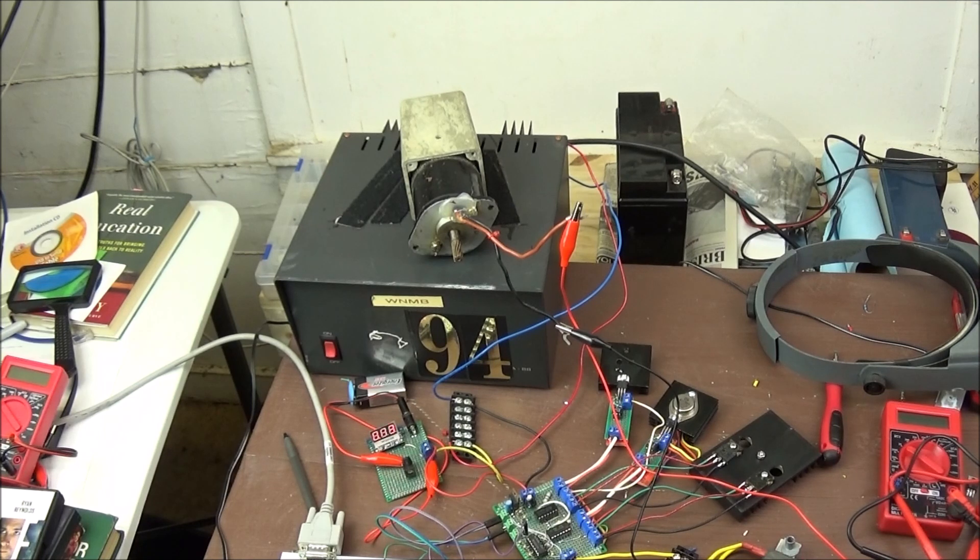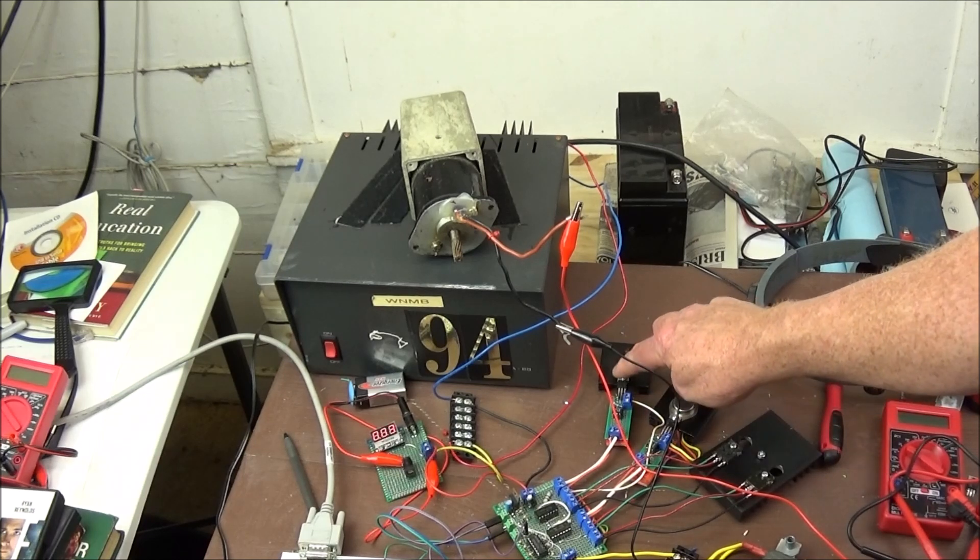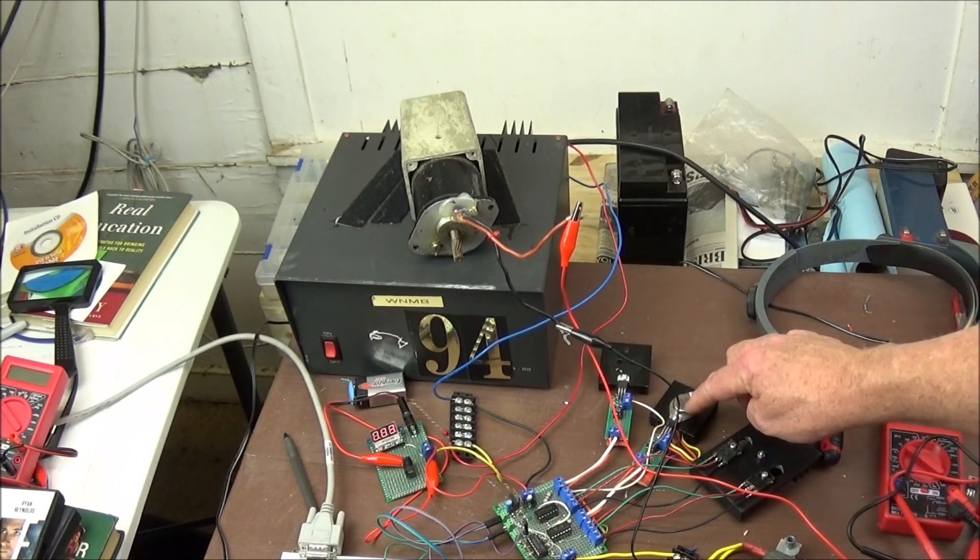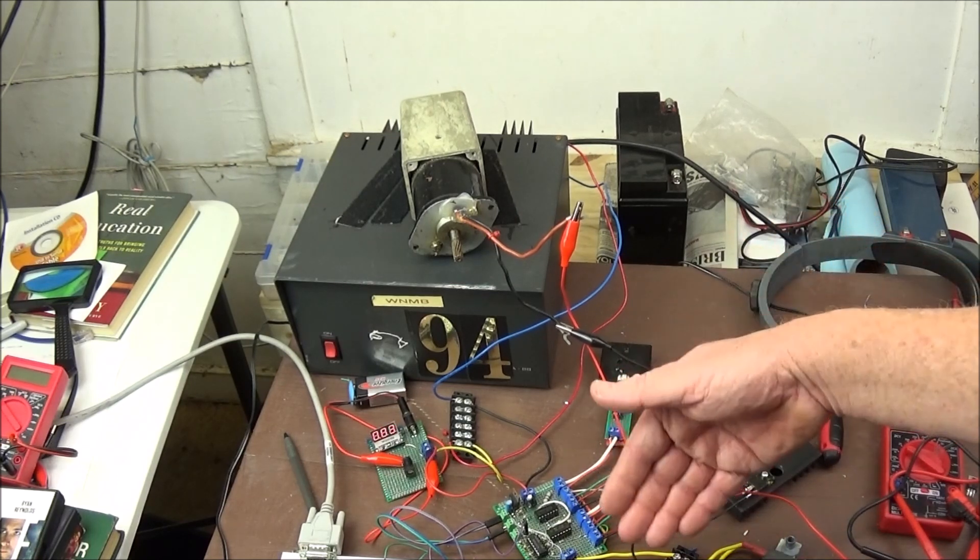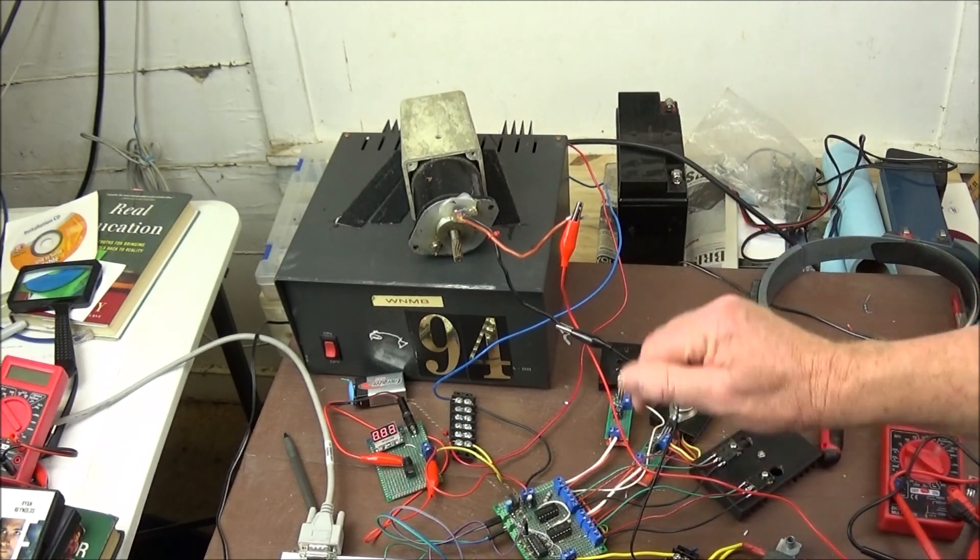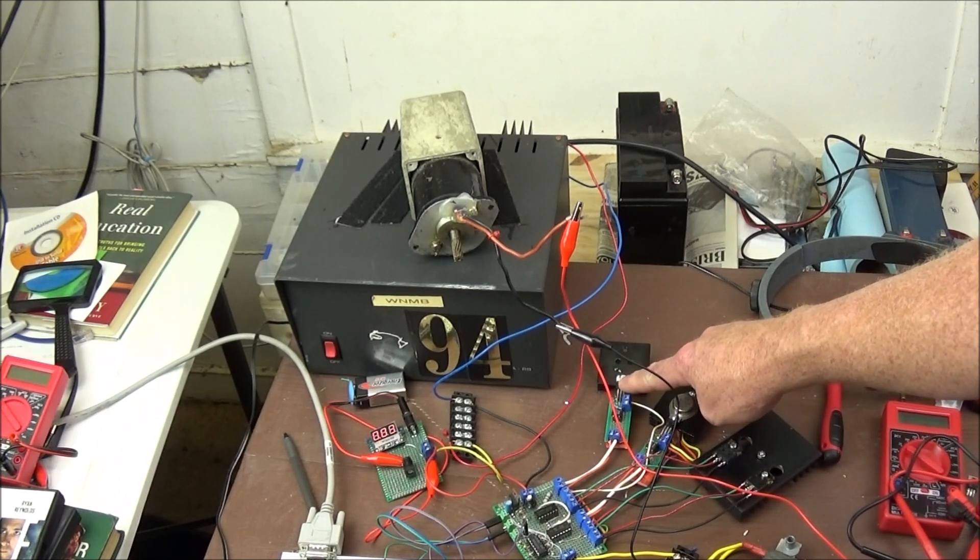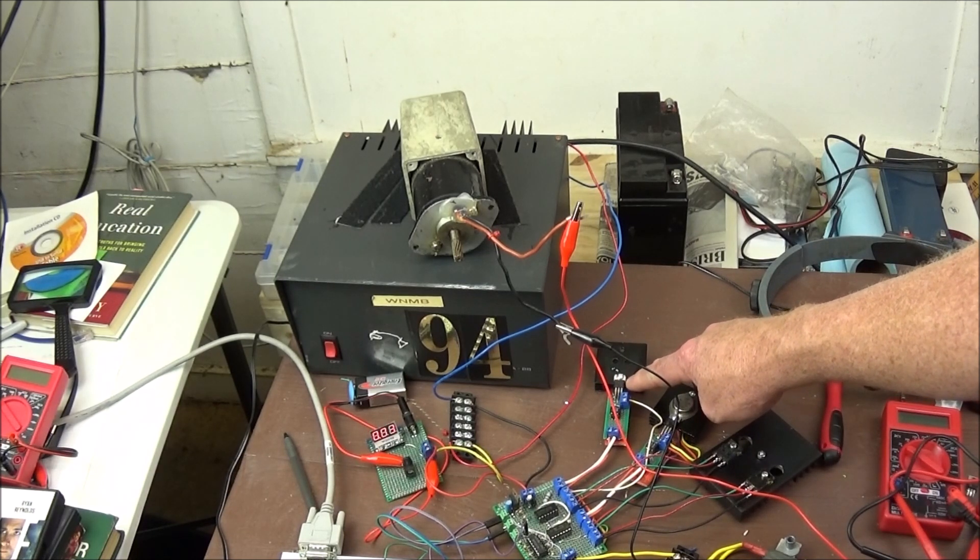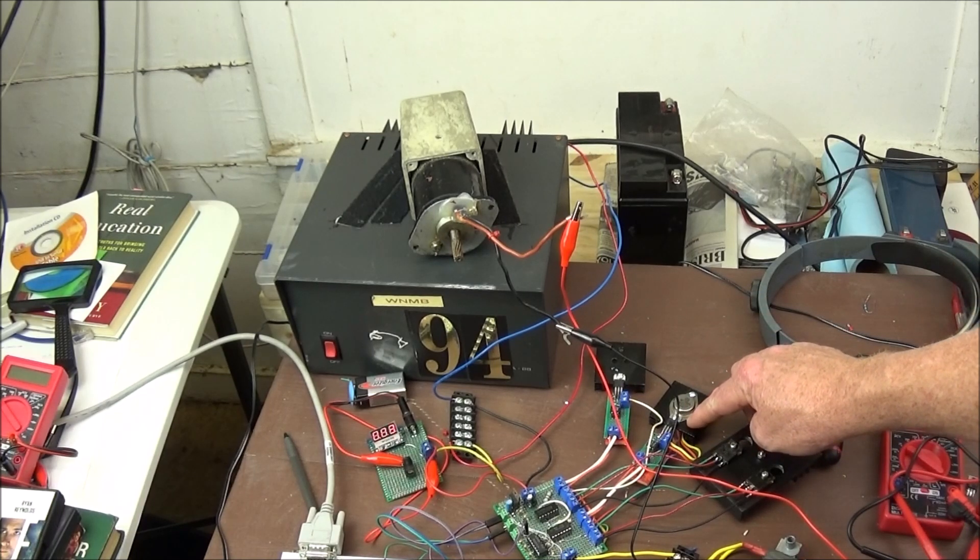Welcome back. Our subject here is a comparison test with these two Darlington devices. They're both optocoupler isolated from the low voltage circuitry. This one is a TIP-120 on this heat sink, and this is the one you've seen in other videos, the MJ-1005.